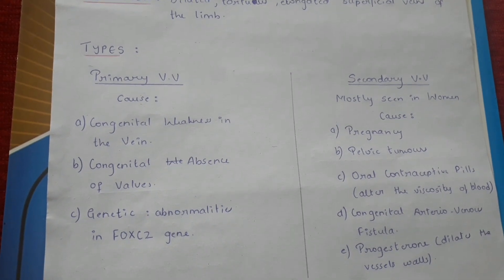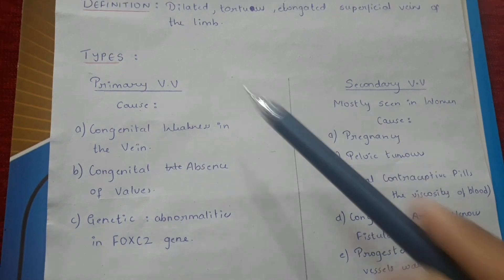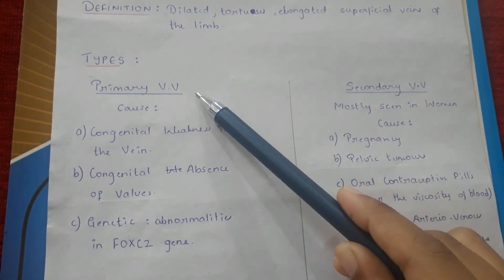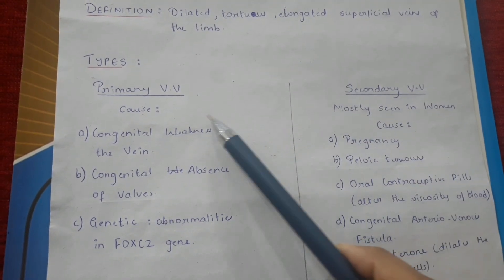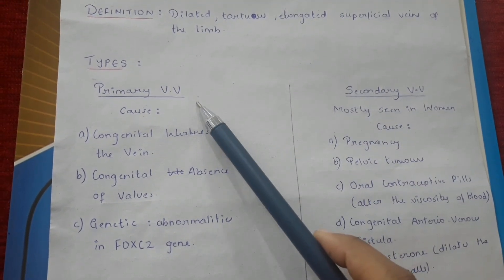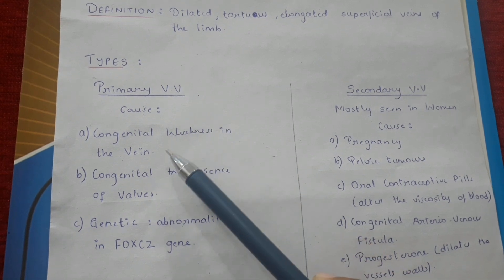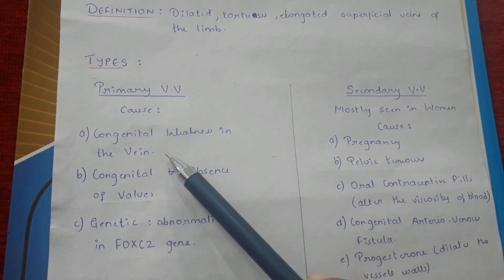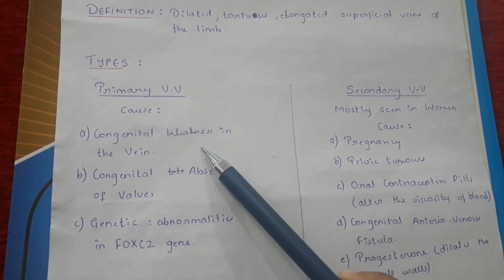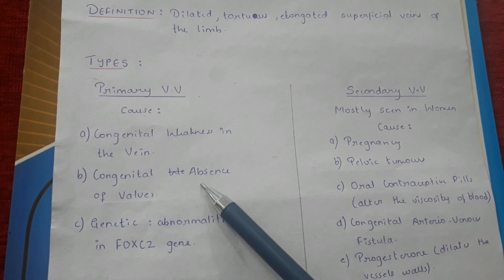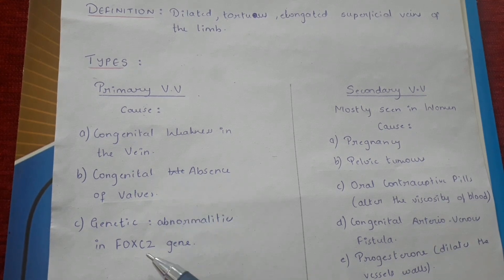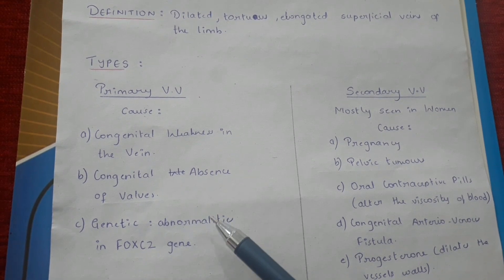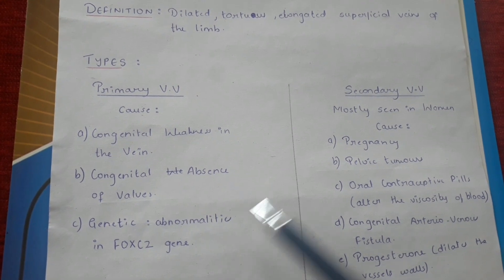Types of varicose veins: we have primary varicose veins and secondary varicose veins. In primary varicose veins, the main cause is congenital weakness in the vein, congenital absence of valves, or any other genetic abnormalities.